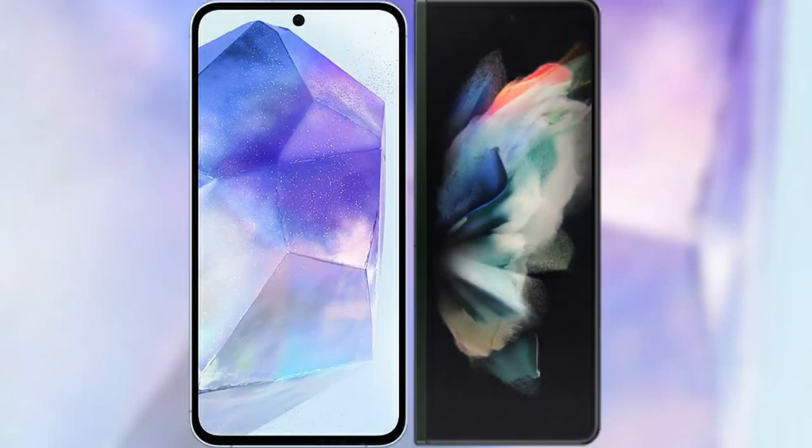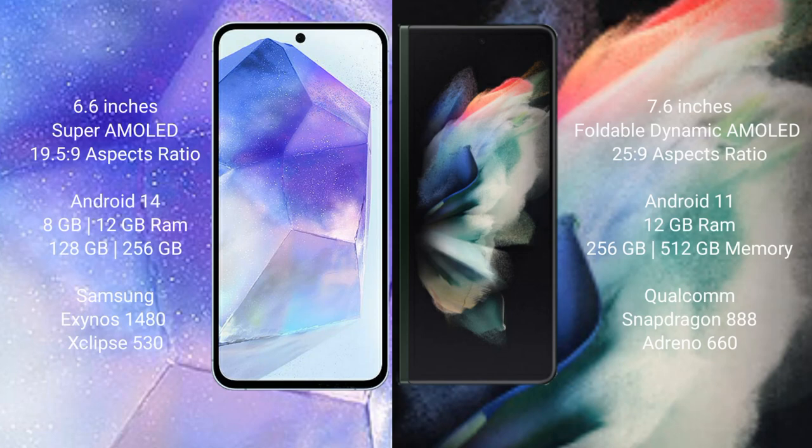I will compare the new Samsung Galaxy A55 with Samsung Galaxy Z Fold 3. The Samsung Galaxy A55 comes with a 6.6-inch Super AMOLED display, and the Samsung Galaxy Z Fold 3 comes with a 7.6-inch foldable dynamic AMOLED display. The Samsung Galaxy A55 runs on the Android 14 operating system.